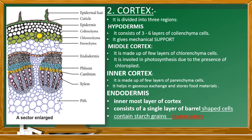The last layer is the endodermis. It is the innermost layer of the cortex. It consists of barrel-shaped cells that contain starch grains. These cells are called starch sheath. The barrel-shaped endodermal cells contain starch grains and are called starch sheath. It acts like a sheath and guards the inner layer.